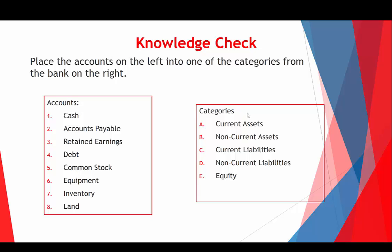How would you classify cash? Current asset. How about accounts payable? Current liability — you owe someone money and you have to pay it within a year. How about retained earnings? It's one of the two equity accounts. How about debt? Assuming it's long-term debt, you'd pay it off in longer than a year, so non-current liabilities — though you need to know if it's long-term or short-term before deciding current or non-current.